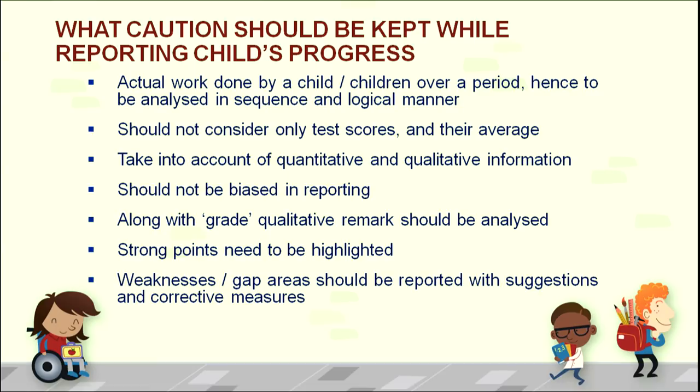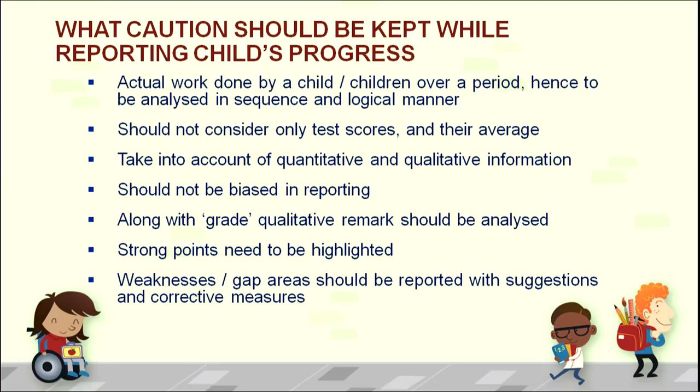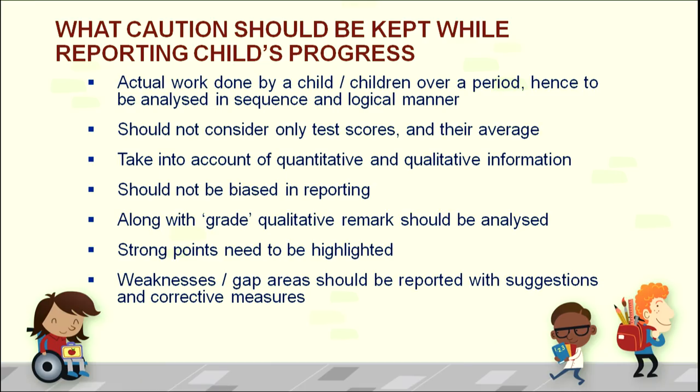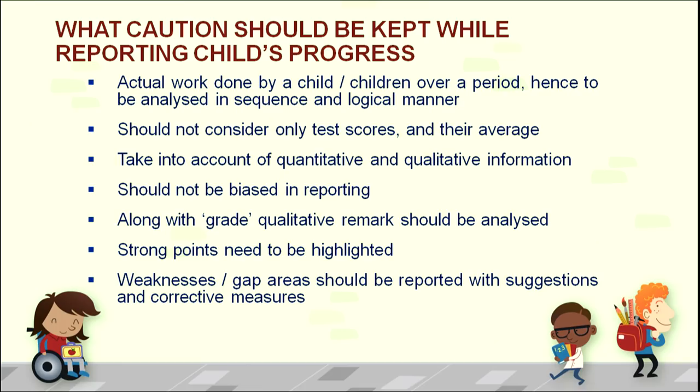What caution should be kept while reporting child's progress? Actual work done by a child over a period of time must be taken into account — not only the best work. Both qualitative and quantitative information should be considered: test papers provide quantitative information, while creative writing, artwork, and craft work give qualitative information. The assessment should include both. It should not be biased in reporting, as incomplete information can sometimes create a situation of biased reporting.